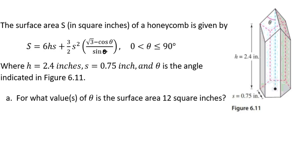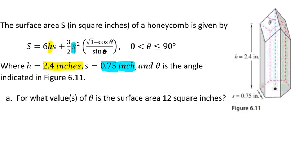Theta is between 0 and 90 degrees. We have that H is 2.4 inches, little s is 0.75 inches, and theta is the angle indicated in our diagram.